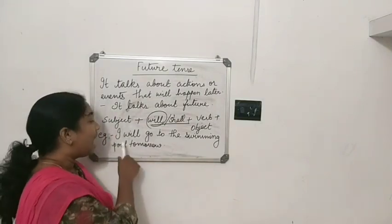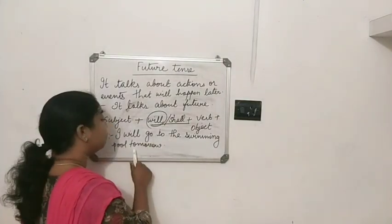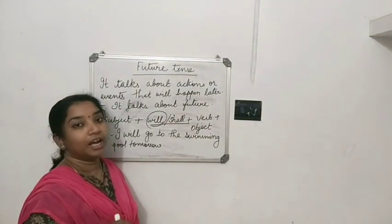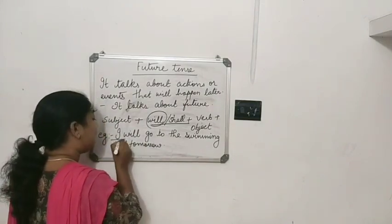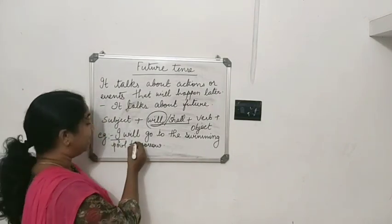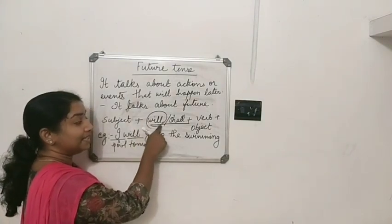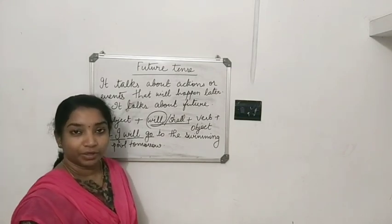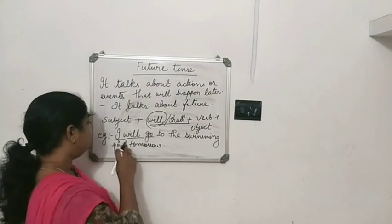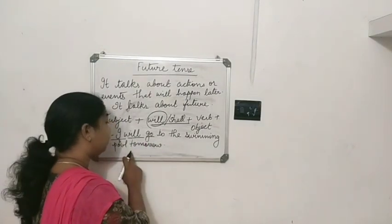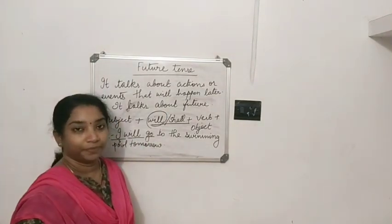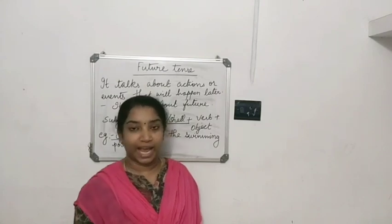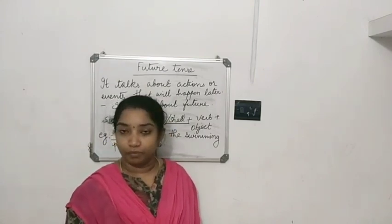For example: I will go to the swimming pool tomorrow. Here, 'I' is the subject, plus will, plus the root form of the verb 'go', plus object. In future tense, we have to add will or shall to the root form of the verb.